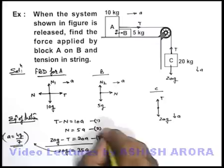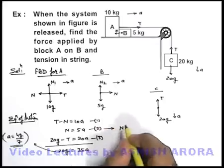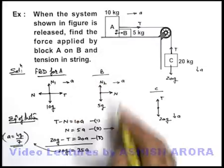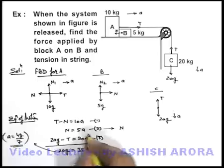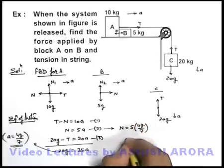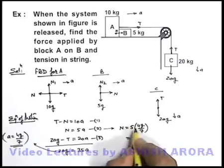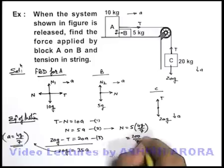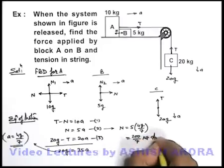Now from this equation 2, we can say the normal reaction which A is exerting on B can be written as 5A. So this N is equal to 5 into 4g by 7. Its value is equal to 20 into g, this is 200 by 7 newton. So this is the answer of our problem.